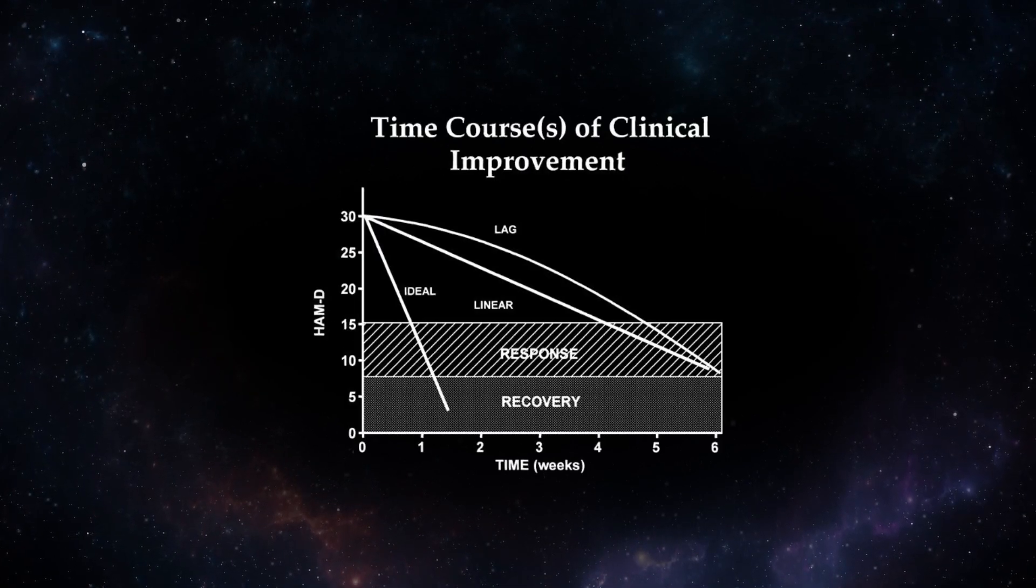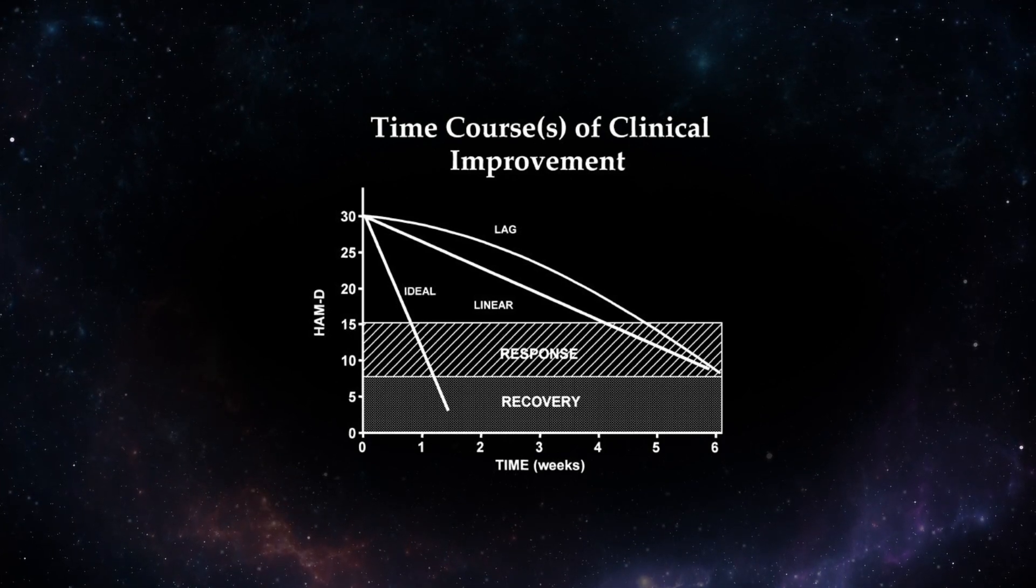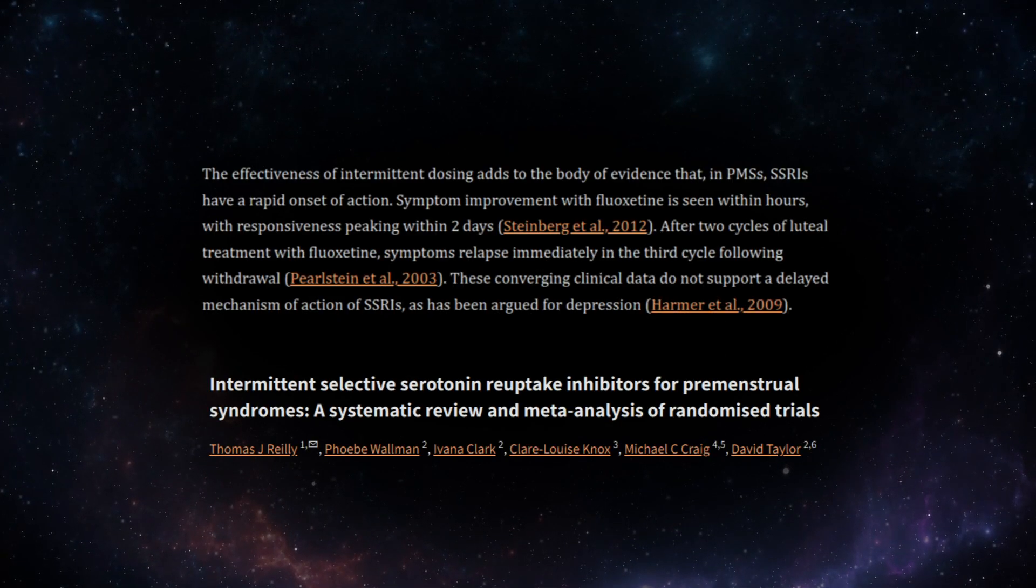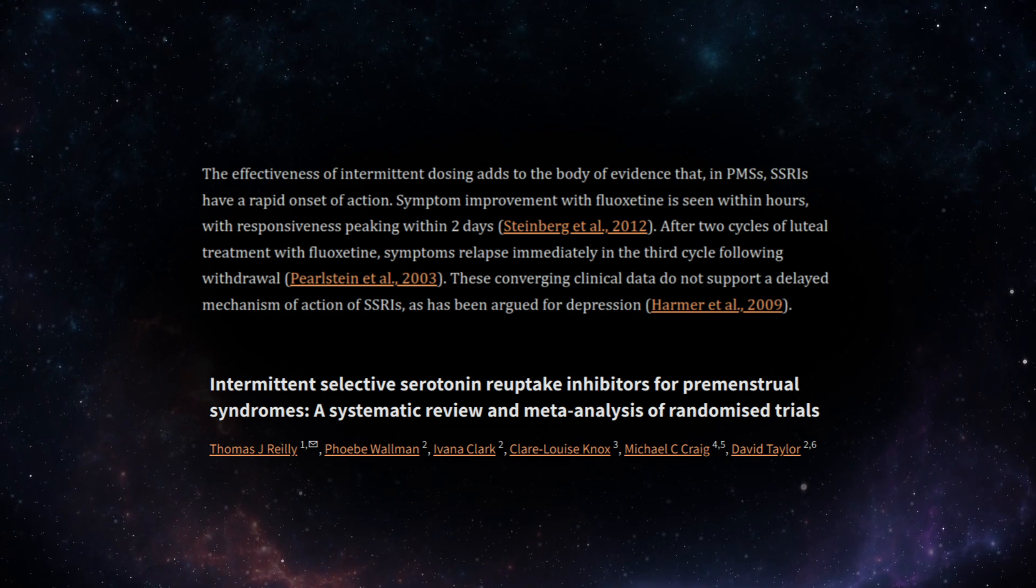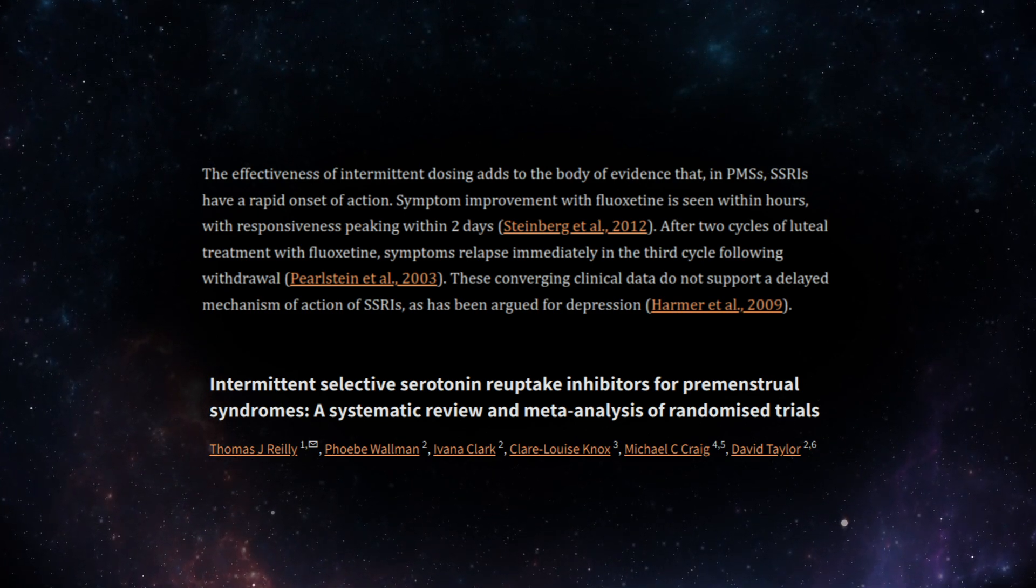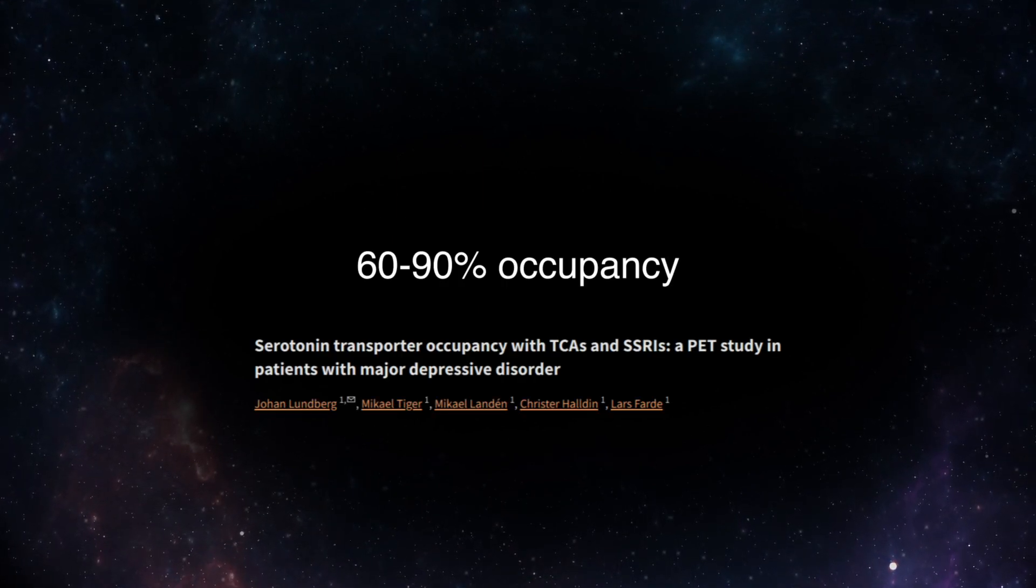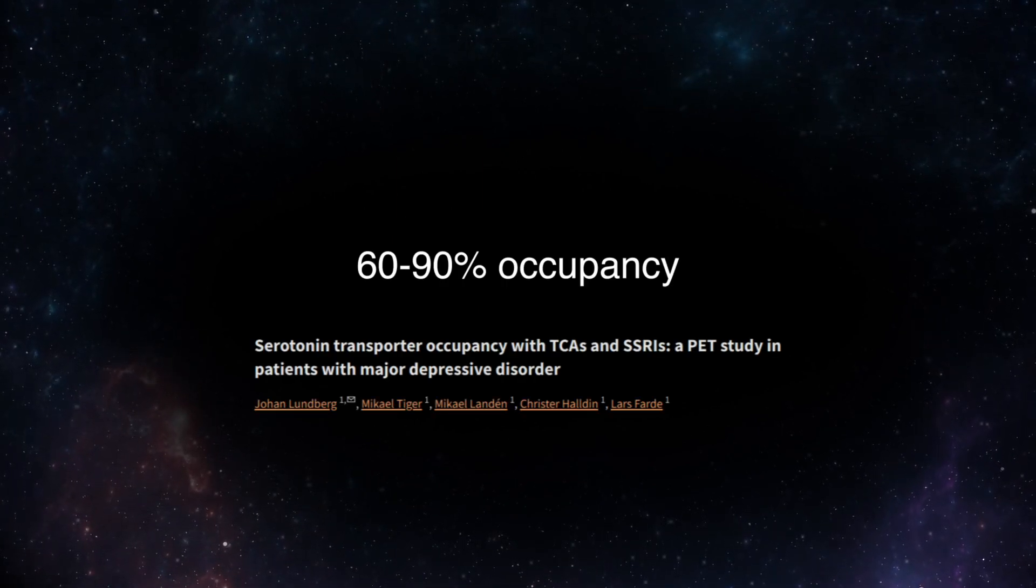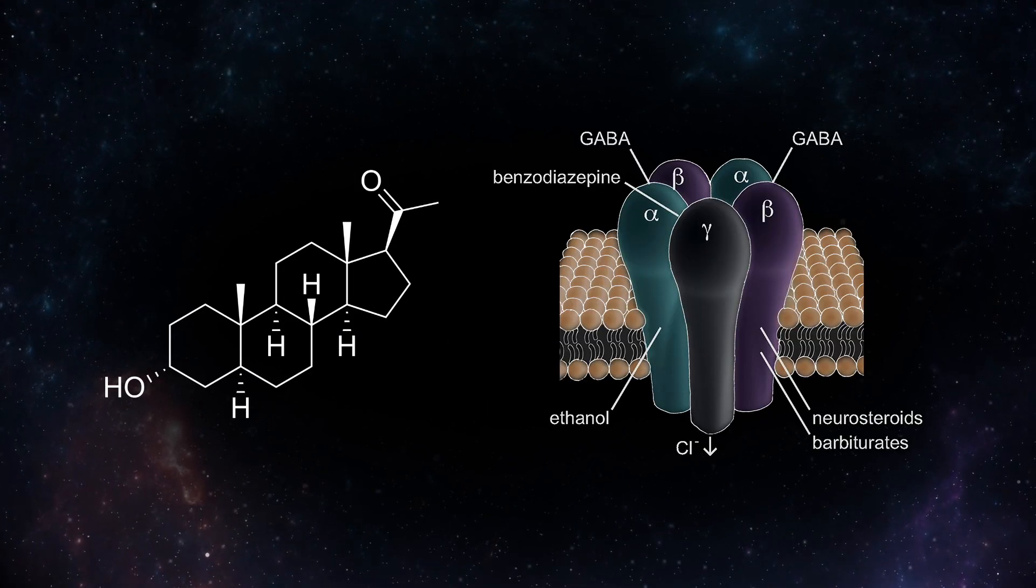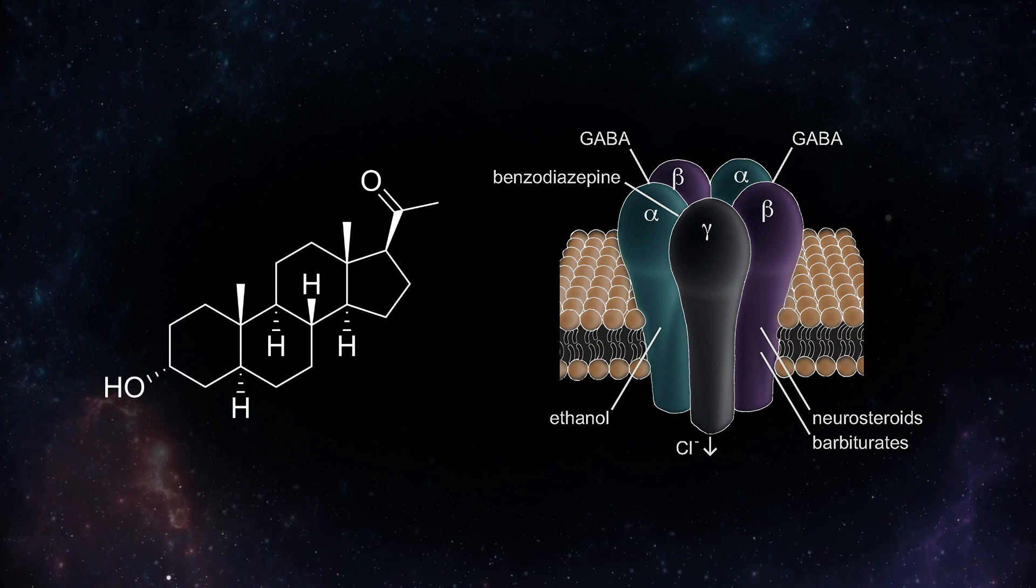For some context, the efficacy of SSRIs in depression is typically delayed by two to four weeks following the initiation of therapy. However, in PMDD, SSRIs like fluoxetine appear to exert their therapeutic effects in a matter of days. The standard dose range of fluoxetine in PMDD and depression is known to be active on the reuptake inhibition of serotonin and is likely far greater than dosages which would be selective for the stimulation of allopregnanolone synthesis.